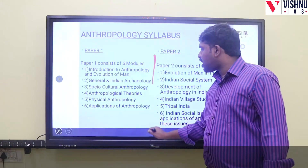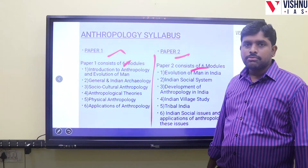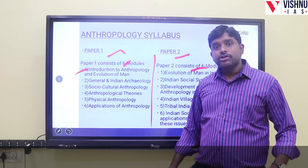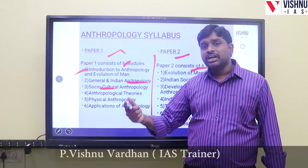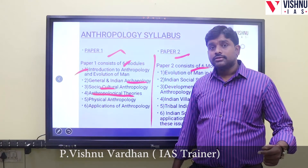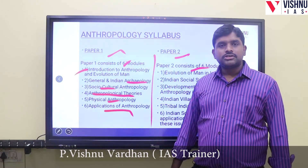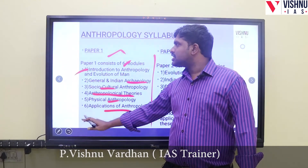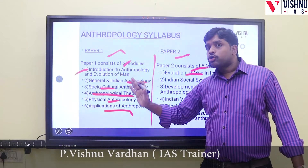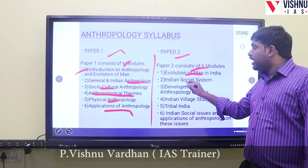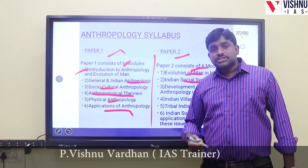The anthropology syllabus is divided into Paper 1 (6 modules) and Paper 2 (6 modules). Paper 1 modules: Module 1 — Introduction to Anthropology and Evolution of Man; Module 2 — Archaeology; Module 3 — Sociocultural Anthropology (family, kinship, religion); Module 4 — Anthropological Theories and Thought; Module 5 — Physical Anthropology; Module 6 — Applications of Anthropology. Paper 2 covers evolution of man in India, and Indian social systems including caste system, Indian villages, agrarian relations, and changing Indian social structure.